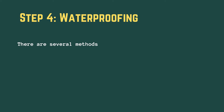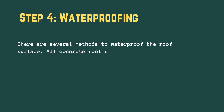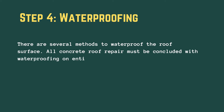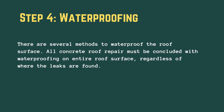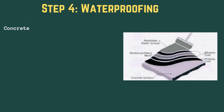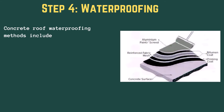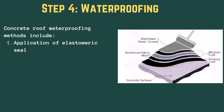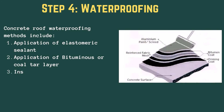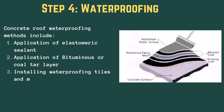Step 4: Waterproofing. There are several methods to waterproof the roof surface. All concrete roof repairs must be concluded with waterproofing on the entire roof surface, regardless of where the leaks are found. Concrete roof waterproofing methods include application of elastomeric sealant, application of bituminous or coal tar layer, installing waterproofing tiles and marble slabs using water-seal joints, and applying waterproofing layers or membranes.